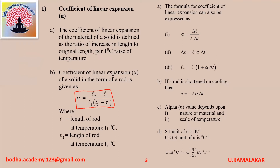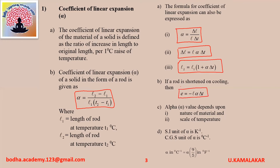The formula for coefficient of linear expansion can also be expressed as alpha equals delta L divided by (L into delta T). The same formula can also be expressed as delta L equals L alpha delta T, or L2 equals L1 into (1 plus alpha into delta T). If a rod is shortened on cooling, then change in length is given as delta L equals minus L alpha delta T.